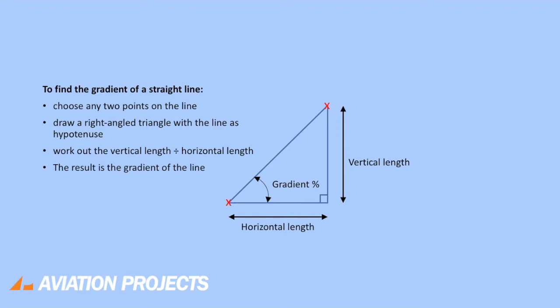The result is the gradient of the line, or in other words, rise over run gives the slope or gradient.